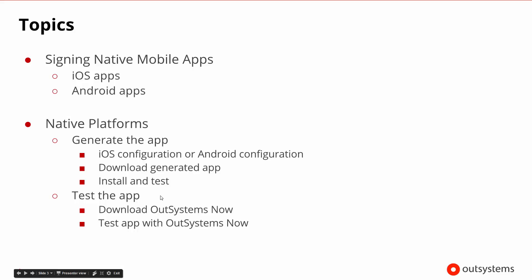Also on the native platforms tab, we can test the app without generating the full native app. We can go ahead and test it using OutSystems Now, which is a pre-built application that has the capability of accessing and displaying apps that are built inside of OutSystems. We should be able to test a good bit of the functionality, but we'll talk more about that when we get to that section.